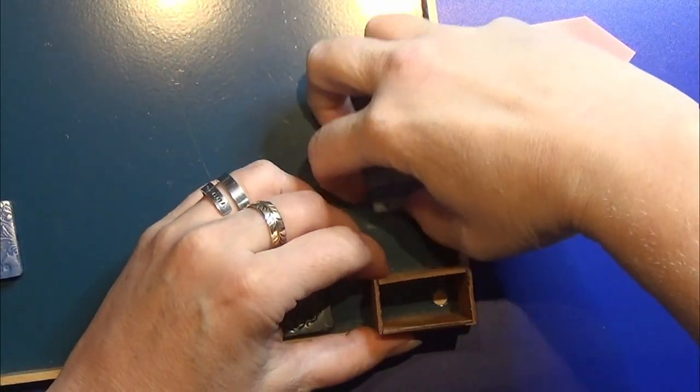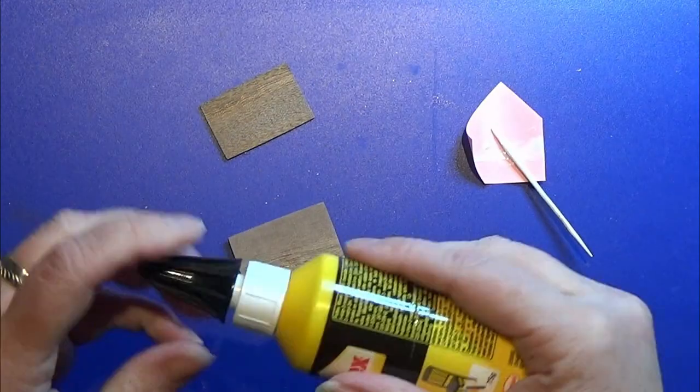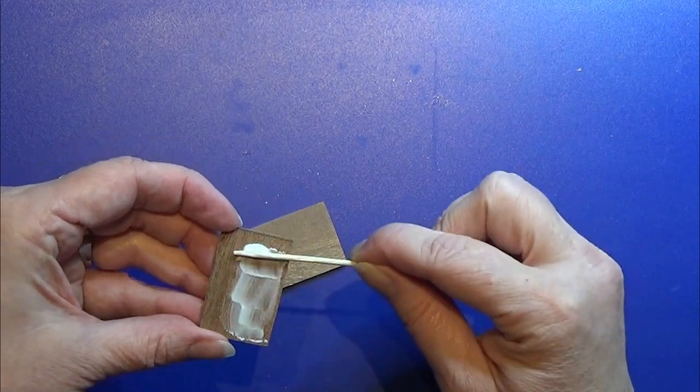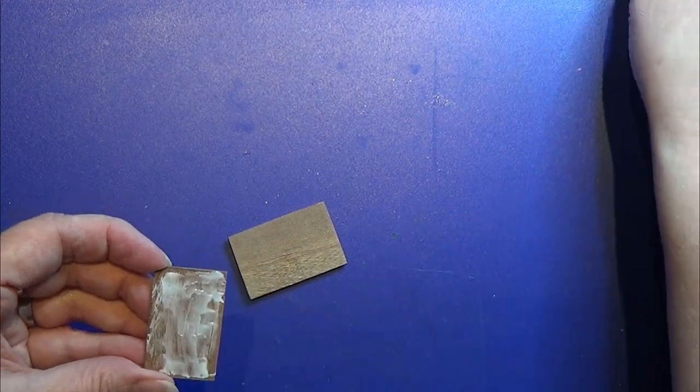When the glue is all dry, I'm taking out the little box from my glue jig. Then I take a piece of A and two pieces of B, and I'm going to sandwich the A in between the Bs and making sure that the backside is all flush.